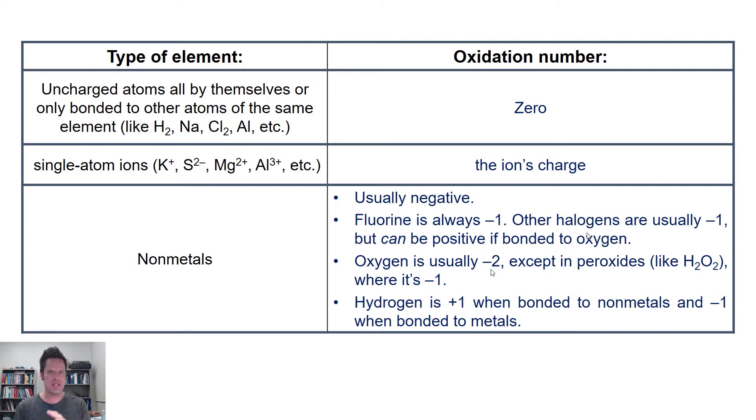Other halogens, those are the elements in column 7a, their oxidation number is also usually negative one, but they can be positive if bonded to oxygen, because oxygen is more electronegative than the other halogen atoms except for fluorine. So when oxygen is directly bonded to one of the other halogens, it will suck electrons away from that halogen, which sometimes gives that halogen a different oxidation number.